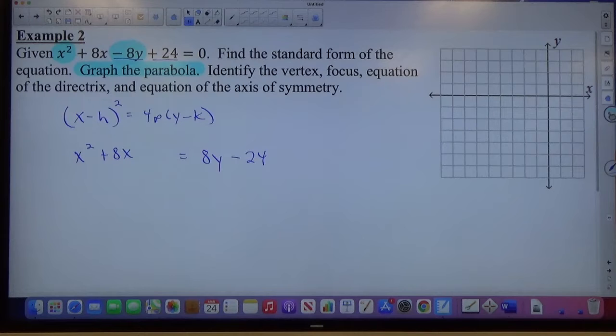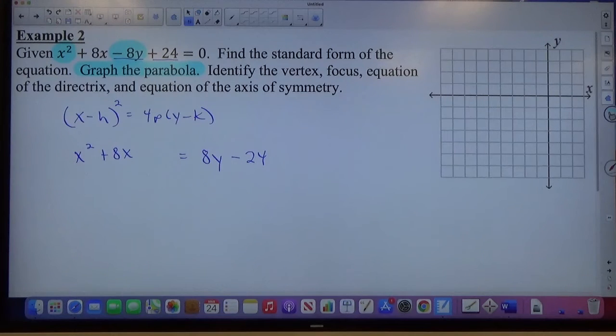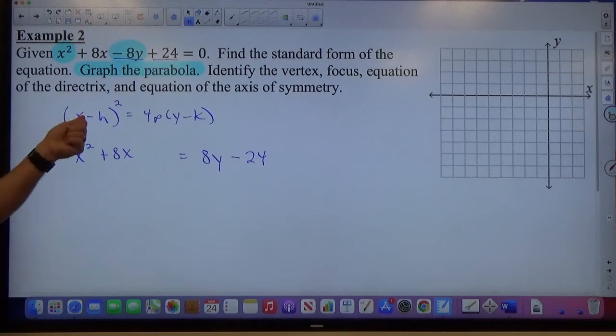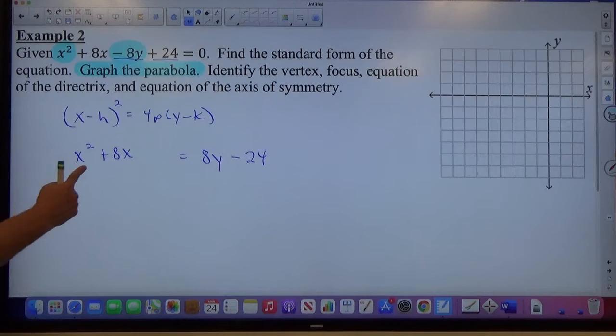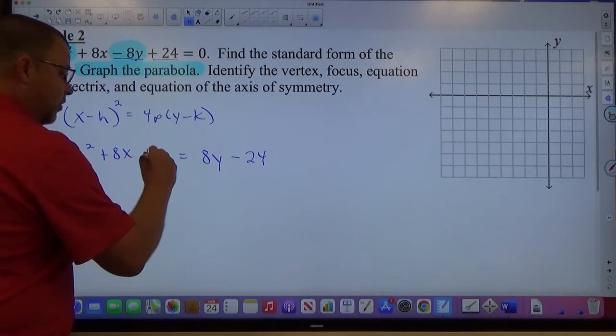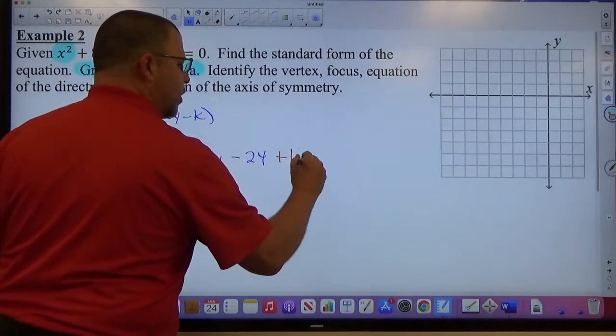We've got x squared plus 8x, I'm going to leave a little bit of space, equals. Moving 8y to the right, so negative 8y becomes positive 8y. Positive 24 becomes negative 24 because it moves across the equal sign. Priority one is to do that: x is on the left, everything not x on the right. Priority two: complete the square, the same way we did it in circle problems. We only have one perfect square trinomial to make this time. So we take half of 8, which is 4, and 4 squared is 16. Plus 16 here, which requires plus 16 over here.